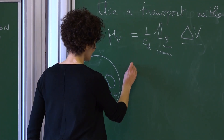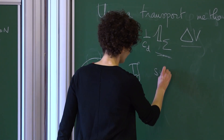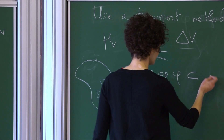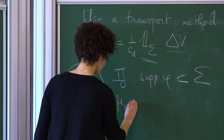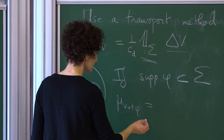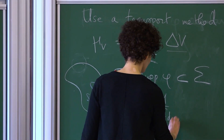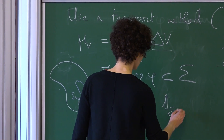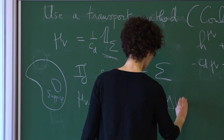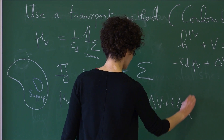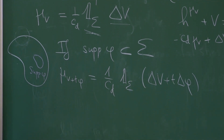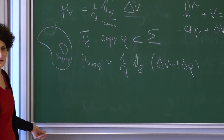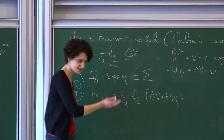Because if the support of phi is included in sigma, you can check that mu_{V+t*phi} actually has the same support — it doesn't change. You just change the density into Laplacian(V) + t*Laplacian(phi). That's very explicit and very nice. As soon as you leave the Coulomb case, you would lose all of these explicit formulas.